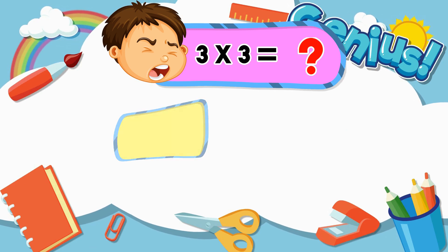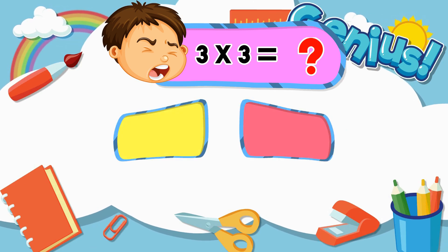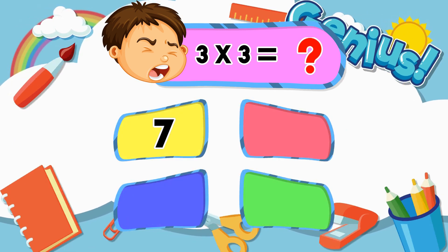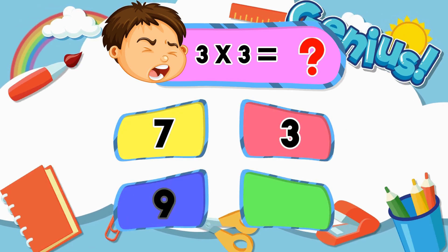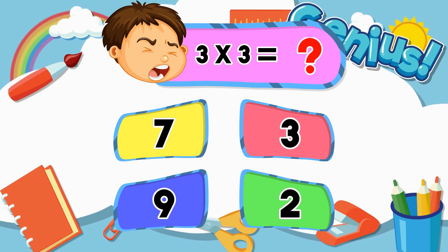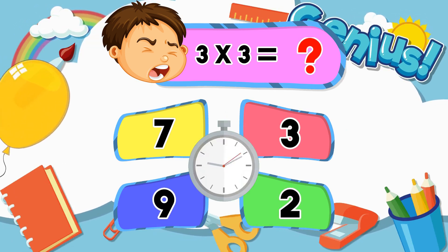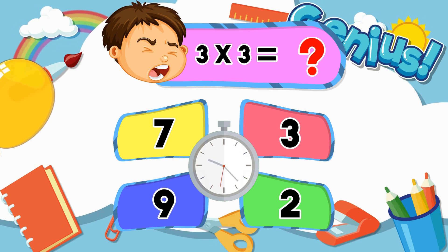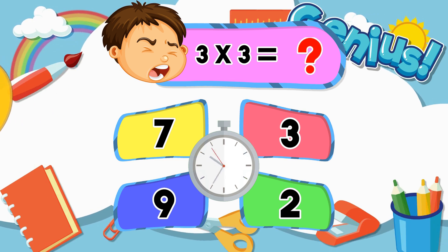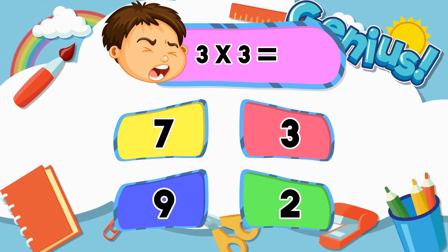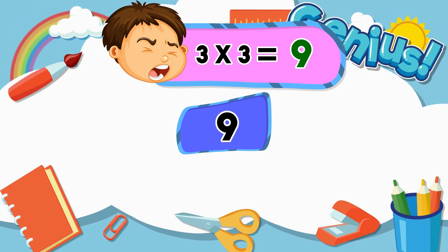What is three times three? Seven. Three. Nine. Two. Nine.